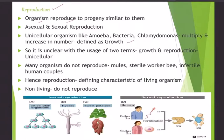For unicellular organisms, growth and reproduction go hand in hand through mitosis. Many organisms do not reproduce — like mules, sterile worker bees, and infertile human couples due to various physiological reasons. Hence reproduction is a defining characteristic of living organisms, and non-living organisms do not reproduce.